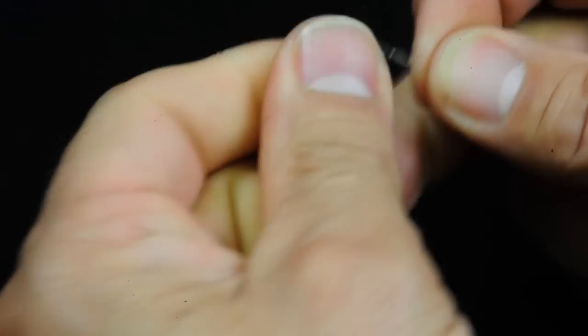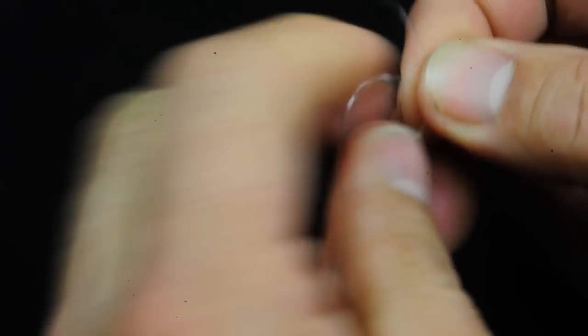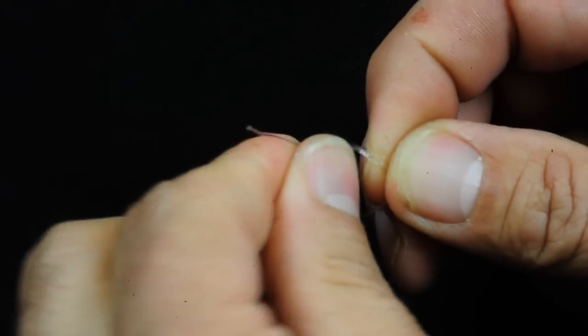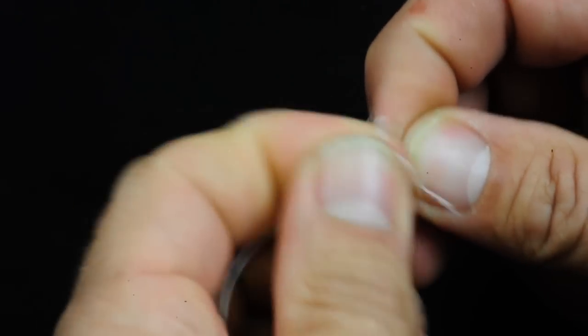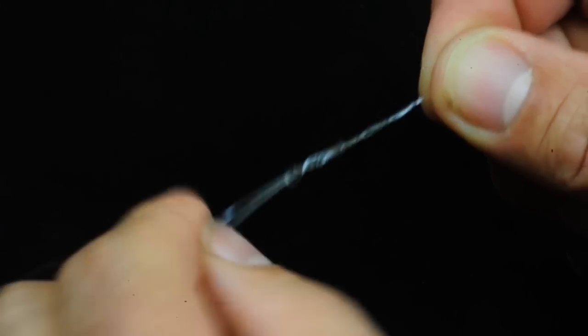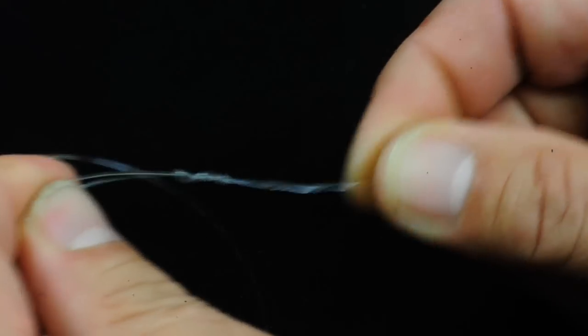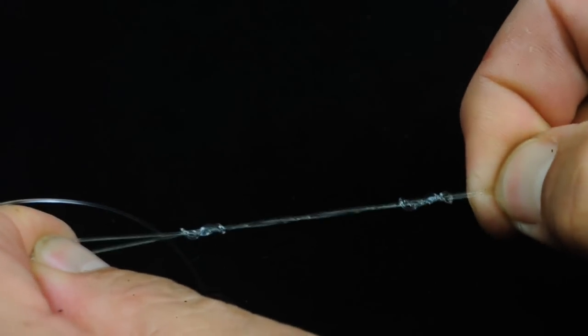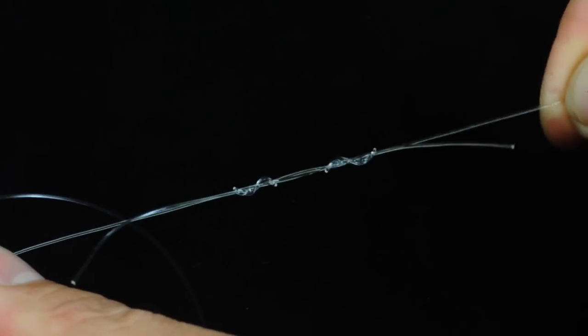The other end the same: 1, 2, 3. Up and create a loop. Make sure this comes through: 1, 2, and 3. Coming out the same way. You can see how they create almost like the double 8 knot. And then I pull this.